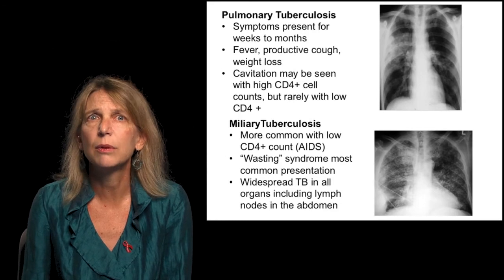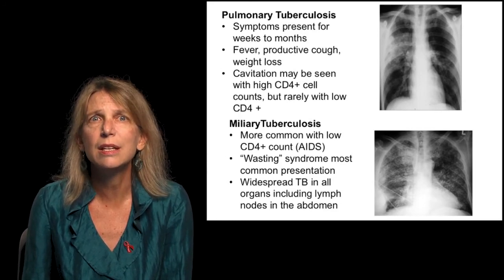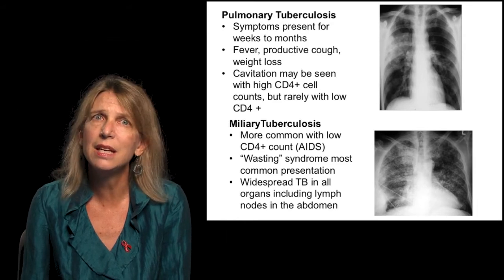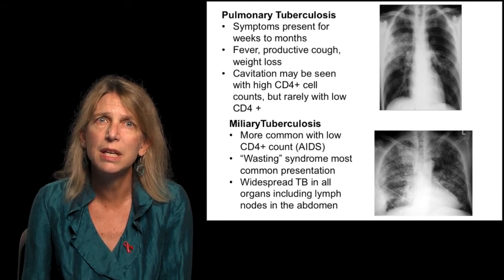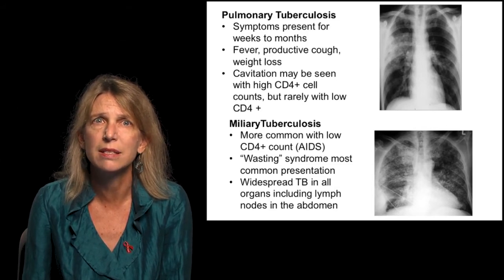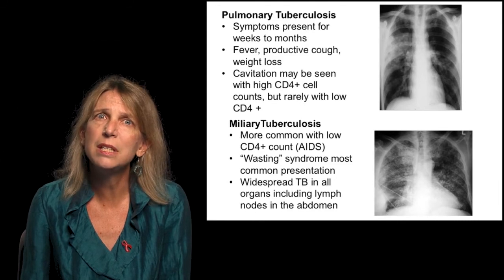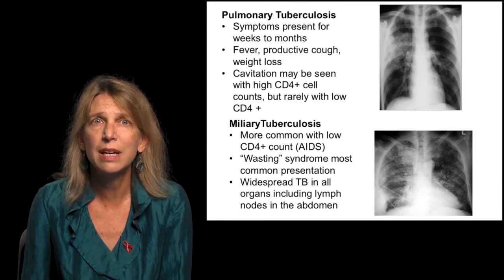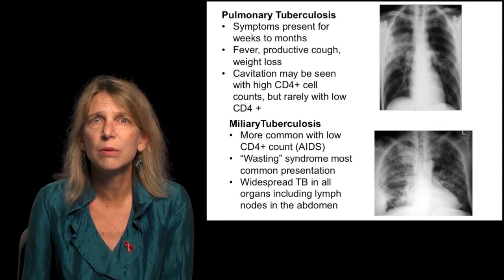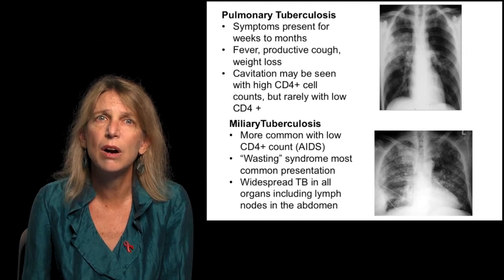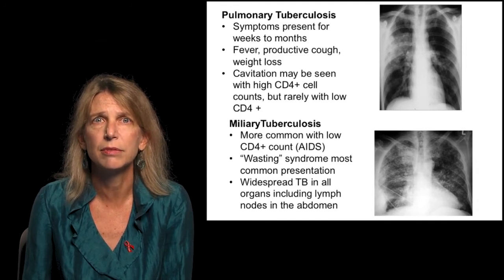Miliary, or disseminated tuberculosis, is more common in patients with low CD4 cell counts and is an AIDS-defining illness. The wasting syndrome, characterized by disseminated TB and profound weight loss, was referred to as slim disease in Africa and was how AIDS was recognized there. Widespread TB occurs in all organs, including lymph nodes in the abdomen, and can cause patients a great deal of discomfort.